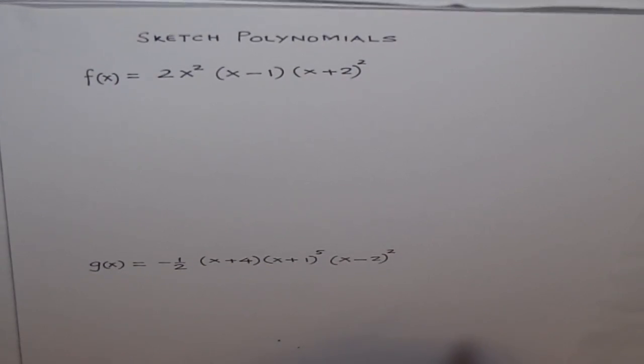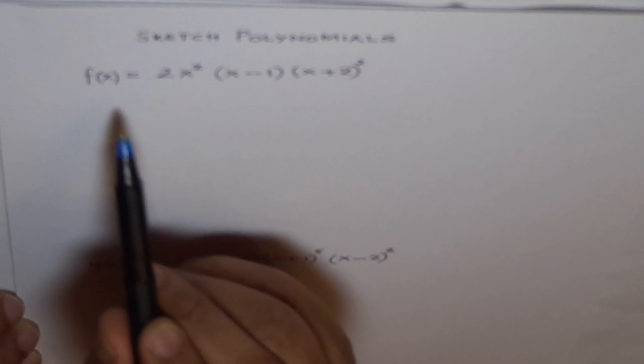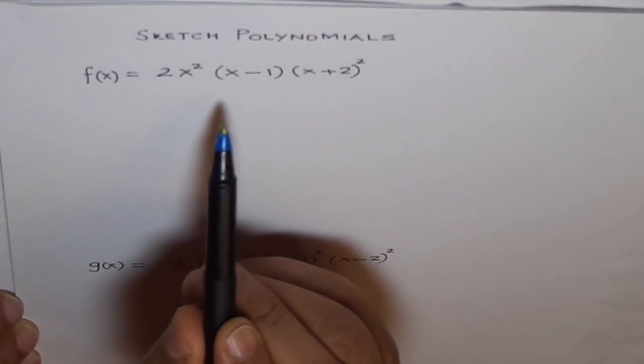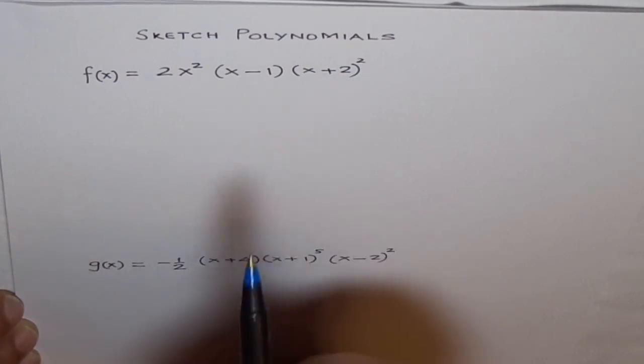Let's try to sketch some polynomials and understand how to sketch them. When you are given a polynomial like this one, f(x) equals 2x squared times x minus 1 times x plus 2 whole squared.